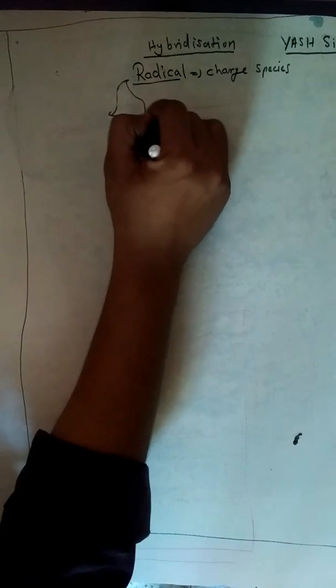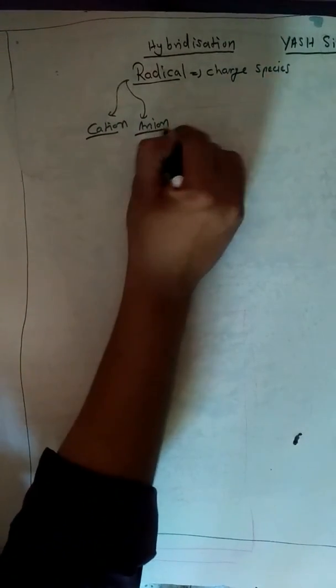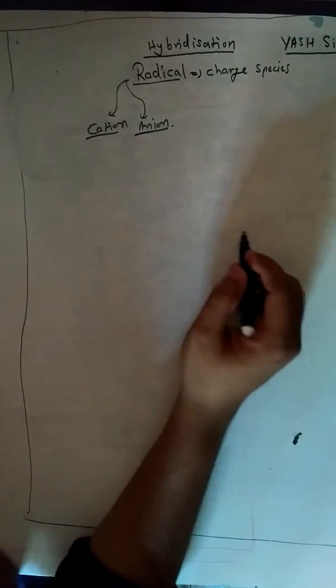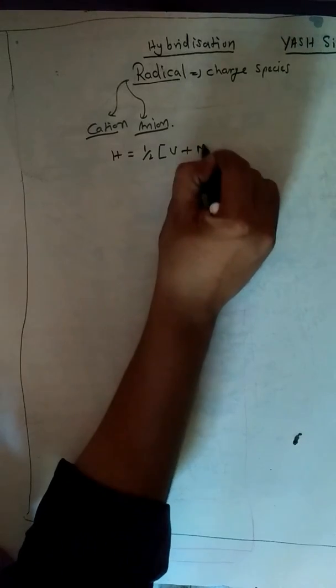Radicals are generally of two types. They can be either cation or they can be either anion. This formula is applicable for both of them. The formula is hybridization equals 1 by 2, V plus N minus C plus A.